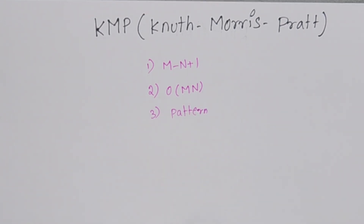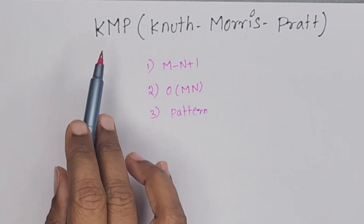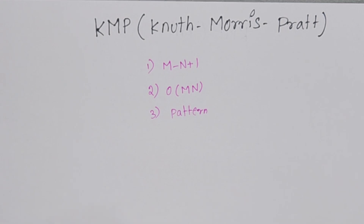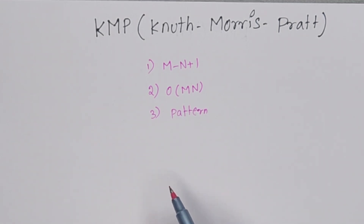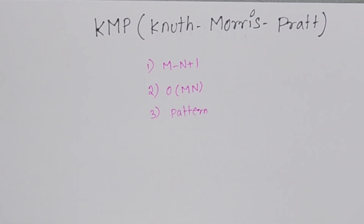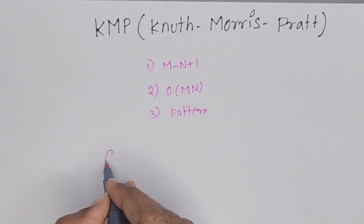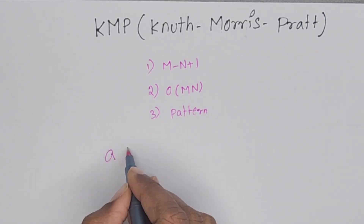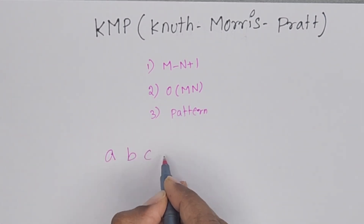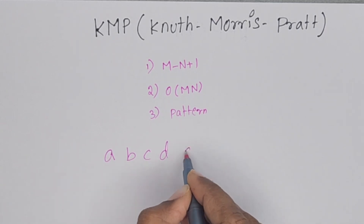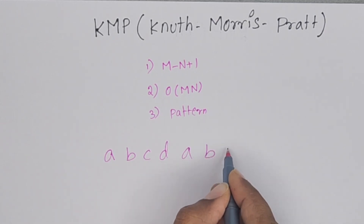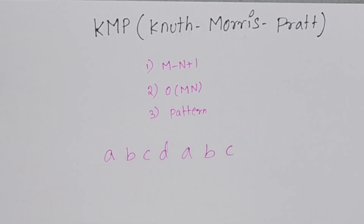Coming to KMP, it will read the pattern and check if anything is repeating in the pattern or not. For example, consider the pattern A, B, C, D, A, B, C — this is one pattern with 7 characters total.